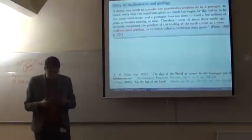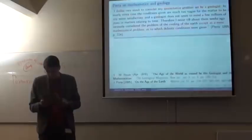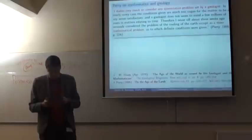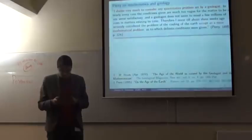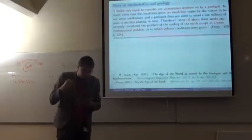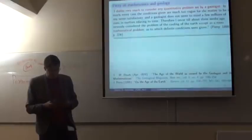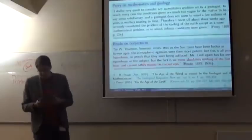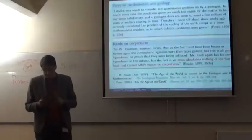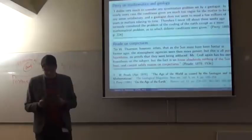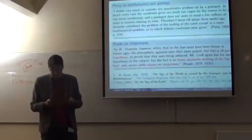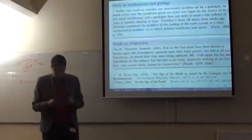Perry continued, long quote, I like it so much, so he says: I dislike very much to consider any constitutive aspect set by a geologist and never till about three weeks ago seriously consider the problem of the cooling of the earth except as a mere mathematical problem as to which definite conditions were given. So the problem is situated for him not as a geological one but as a mathematical one. And a somewhat similar stance was taken already in 1878 by Mellard Reid who in his article entitled The Age of the World as viewed by the geologist and the mathematician concluded that facts are safer than theories. His own position was well summarized in a footnote where he emphasized the hypothetical status of Kelvin's assumptions and stressed that, quote, we cannot safely reason on conjectures.